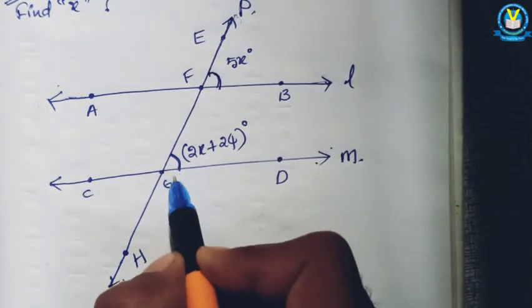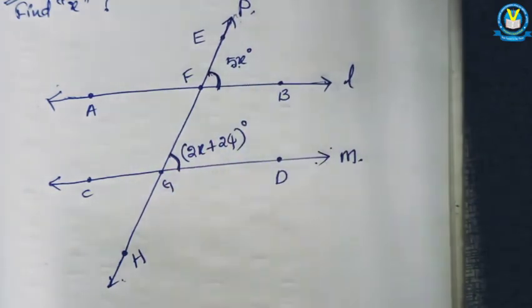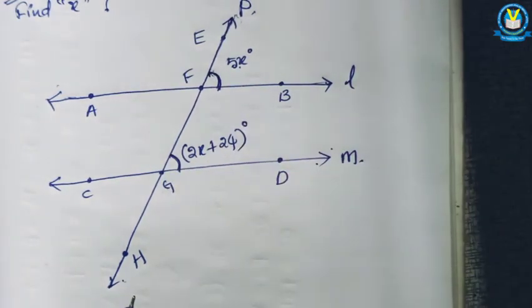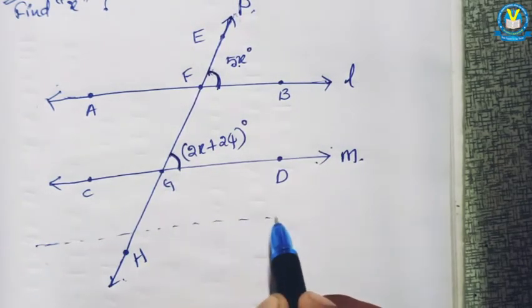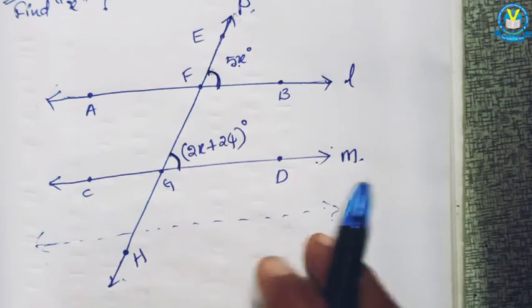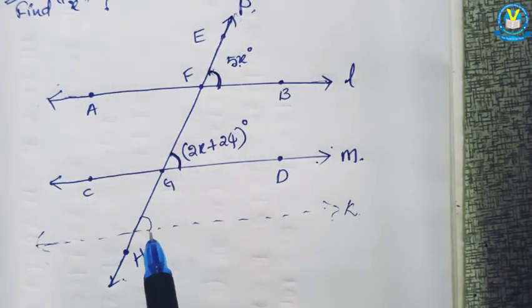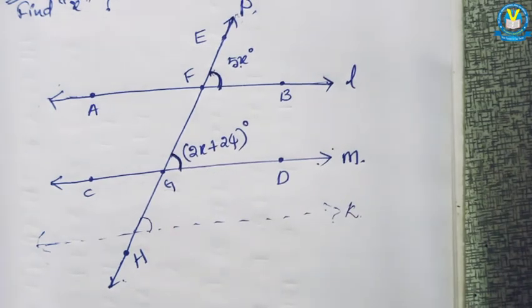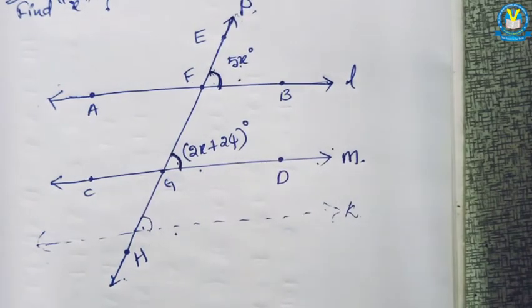Here observe: these two lines have two angles. One is 5x degrees, another one is 2x plus 24 degrees. In angle properties, these two are corresponding angles. Suppose another line K is also a parallel line to L and M. Here also having one angle — that is also a corresponding angle. If the angle is 30 degrees, this angle is also 30 degrees, and it is also having 30 degrees. So that is called corresponding angles — the equal angles formed on the same side.